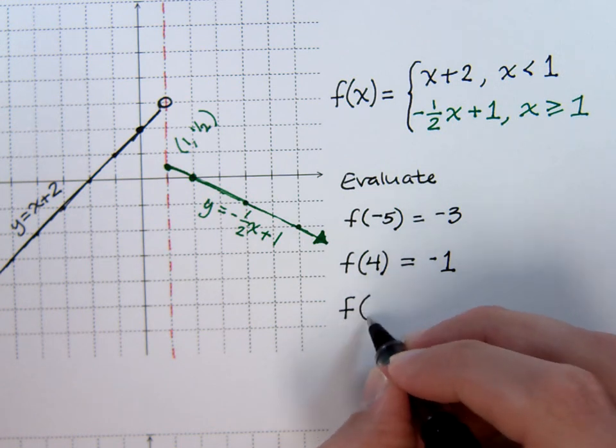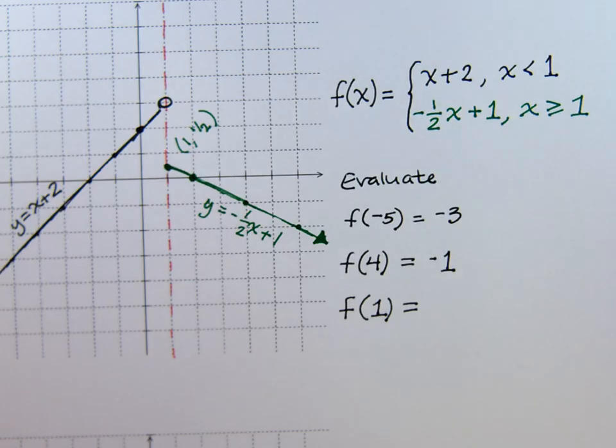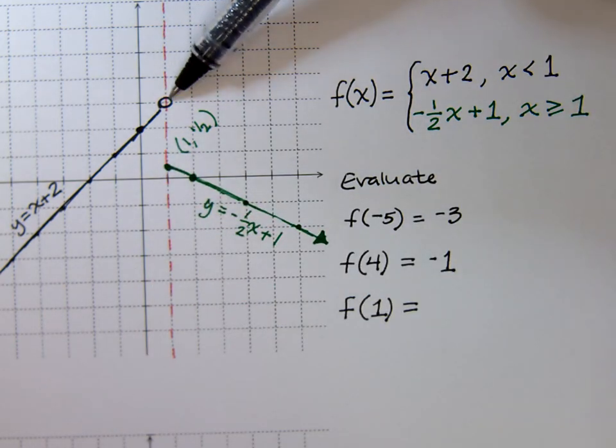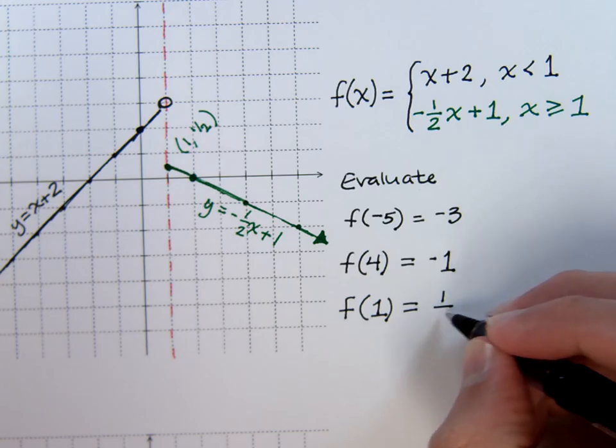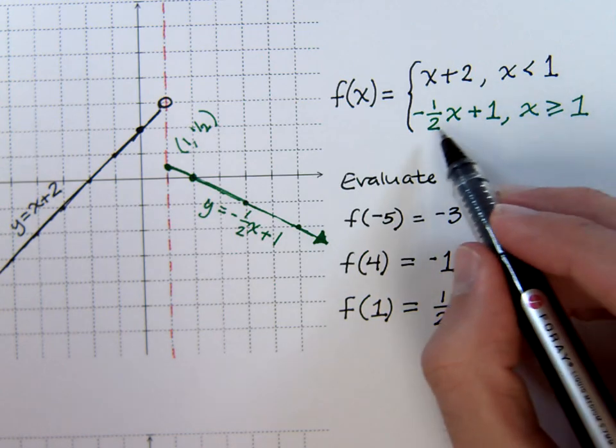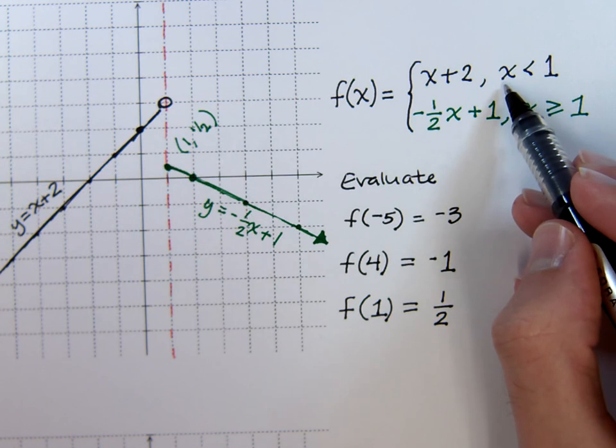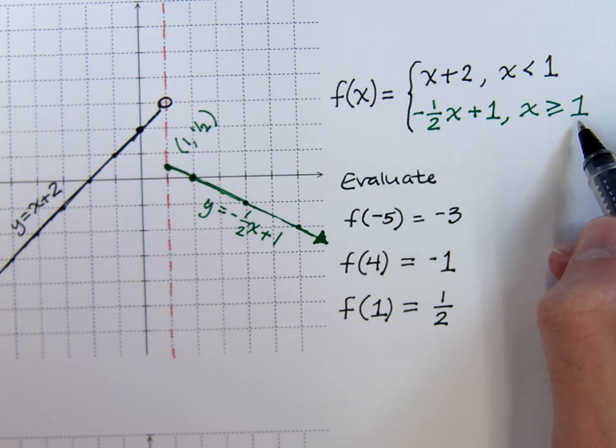What about if I ask you to evaluate f of 1? 1 is where things change. When you look at the graph, you see that when x is equal to 1 is right here on the red line. You have an open circle here, filled in circle here. And it's this filled in circle that is that function value. So this is just going to be 1 half. If you look at the conditions here, you see that it's only the green guy that will accept x values that equal 1. The first one only will accept x values that are less than 1, but not equal to. This is the one who accepts those values of x that equal 1.